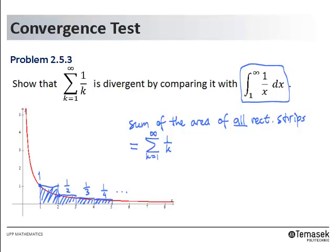For each strip, we see that the area is higher than the area under the curve. The area under the curve is colored yellow here. Hence, we conclude that the area of all rectangular strips should be greater than or equal to the area under the curve from 1 to infinity, where the curve is the graph of y equals 1 over x.